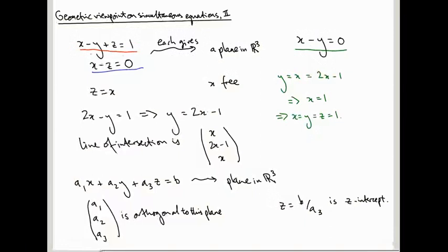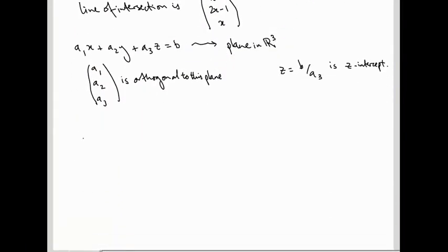Okay, this is what happens with three variables. What if we add more variables? Four variables, for example. So with four variables, each equation, each linear equation, a1w plus a2x plus a3y plus a4z equals b, defines something in four-dimensional space.